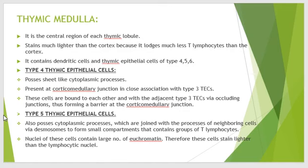Type 4 thymic epithelial cells possess sheet-like cytoplasmic processes and are present at the corticomedullary junction in close association with type 3 thymic epithelial cells. These type 4 cells are bound to each other and to adjacent type 3 thymic epithelial cells via occluding junctions, forming a barrier at the corticomedullary junction.